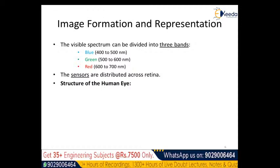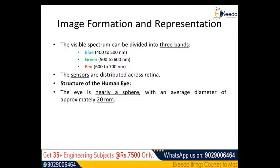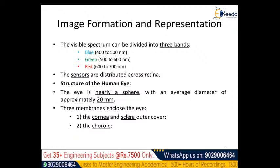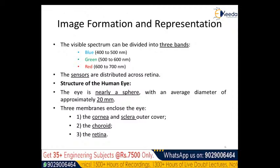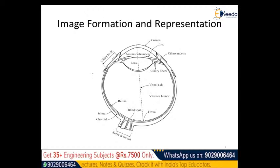The human eye is nearly spheroidal in shape with an approximate diameter of 20 millimeters. The three most important membranes formed by tissues and cells are: first, the cornea and sclera, which form the outer cover; second, the choroid; and third, the retina, which is most important for sensing the surrounding scenario.